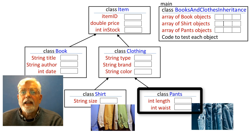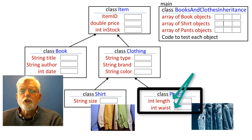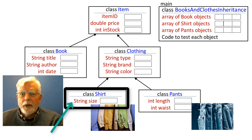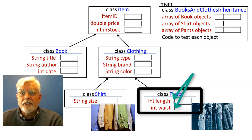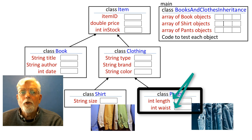The pants class definition will be similar to the shirt class definition, except that it has two pieces of member data for length and waist. The string data type was needed for shirt so that it could hold letters L, M, and S for size. The pants class definition is to be written using type int for length and waist. This also means that code for the getters and setters need to process int data, and the objects in main need to use int data type when defining the pants objects.